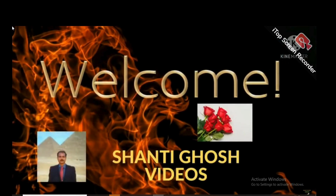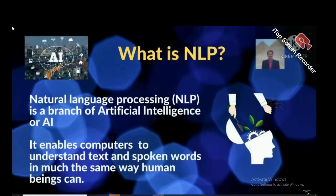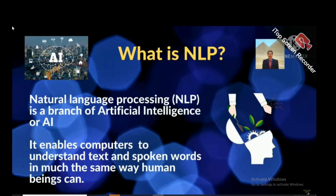This is Shanti Ghosh. Now what is NLP? Natural language processing is a branch of artificial intelligence or AI. AI is a branch of computer science. NLP enables computers to understand text and spoken words in much the same way human beings can.